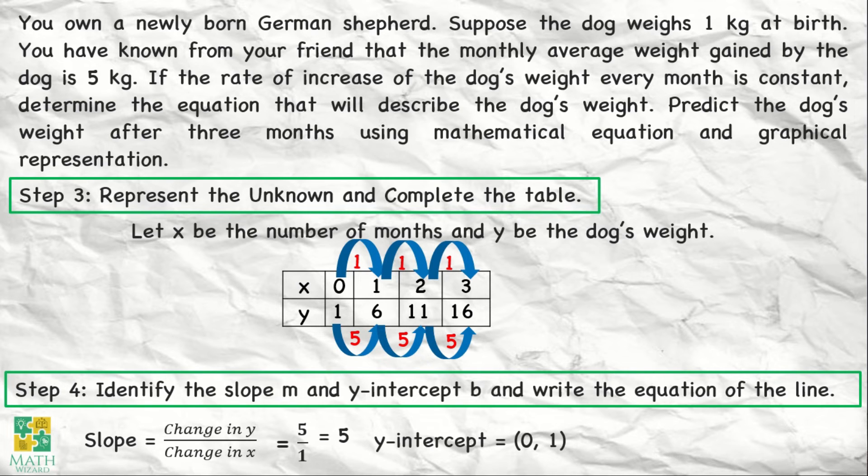Hanapin naman natin ang y-intercept. Y-intercept is at point 0, 1. Para ma-identify natin ang ating y-intercept, given lamang ang ating table values, ang gagawin natin, titingin lang tayo sa table, and then titignan natin kung ano yung value ng y when x is 0. Makikita natin sa table values natin na when x is 0, the value of y is 1. Kaya, ang ating y-intercept is at point 0, 1. Kasi kung meron tayong equation for us to find the value of y, or the y-intercept rather, ang gagawin lang natin is we let x equal to 0 for us to find the y-intercept.